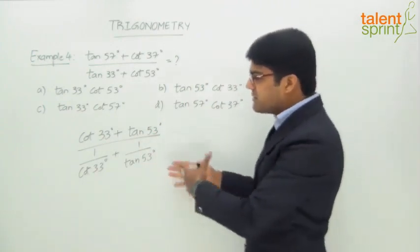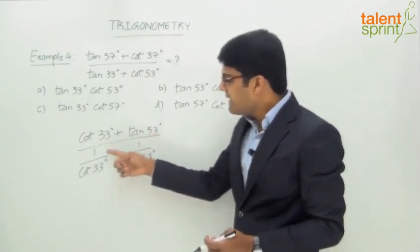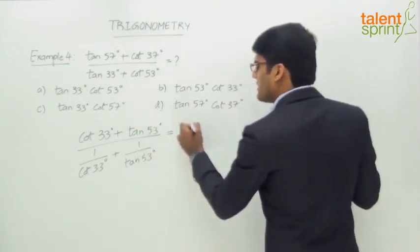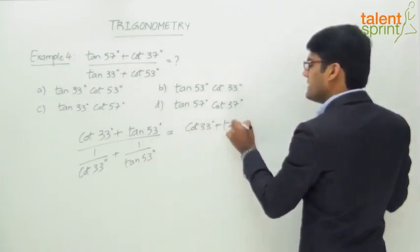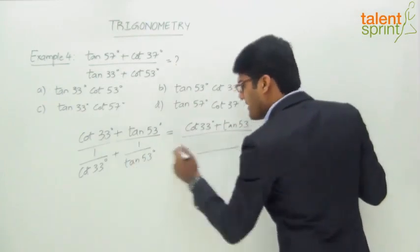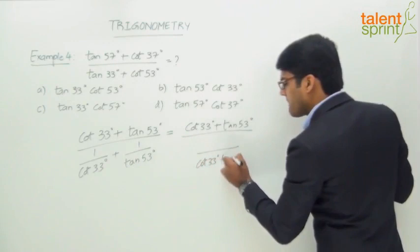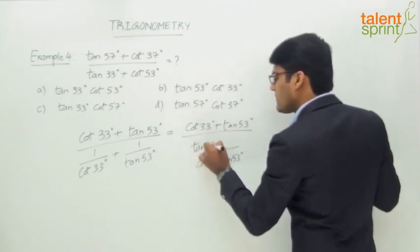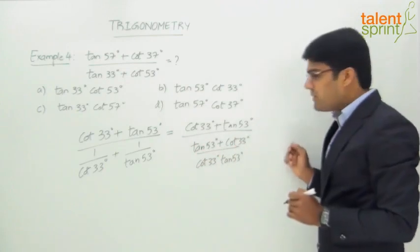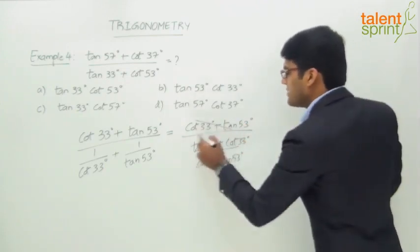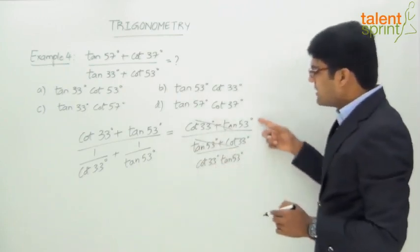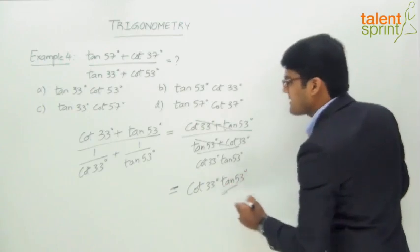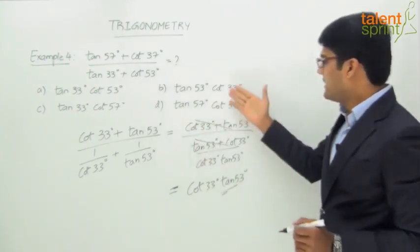When we simplify the denominator, we take the LCM, giving (tan53 + cot33) / (cot33·tan53). The full expression becomes: (cot33 + tan53) divided by (tan53 + cot33) / (cot33·tan53). The (cot33 + tan53) terms cancel out, and the denominator goes to the numerator, leaving us with cot33·tan53.